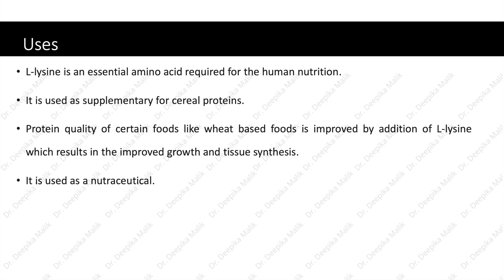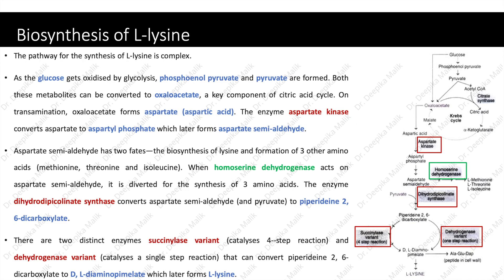The next slide shows the biosynthesis pathway of L-lysine, which is somewhat complex. The raw materials provided in the fermenter break down into fermentable sugar, i.e., glucose. As the glucose gets oxidized by glycolysis, phosphoenol pyruvate and pyruvate are formed. Both these metabolites can be converted to oxaloacetate, a key component of the citric acid cycle. On transamination, oxaloacetate forms aspartate or aspartic acid. After this, the enzyme aspartate kinase converts aspartate to aspartyl phosphate, which later forms aspartate semi-aldehyde, as you can see in the diagram shown towards the right side.